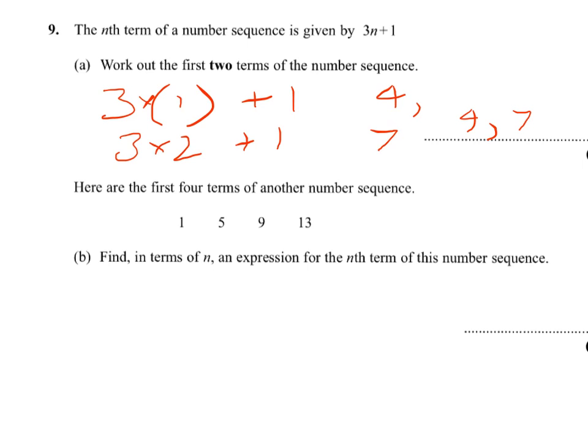Here are the first four terms of another number sequence, and we've got to find the expression for the nth term of the number sequence. So check what the terms are going up in, and we're adding 4 each time to go from term to term.